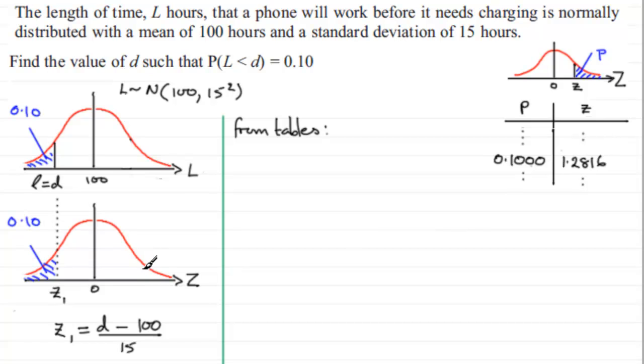So this value here for z would be 1.2816. But if I mirror it back again on the other side here, then z1 from these tables would be the negative value, minus 1.2816.